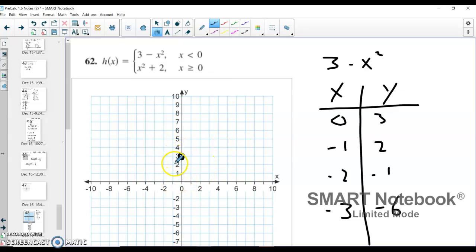Negative 1 up 2, so right here. I got negative 2 down 1, so right here. And then negative 3 down 6 down here. And I have my first part of my function here.